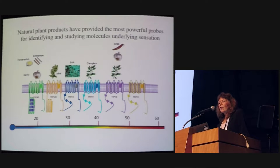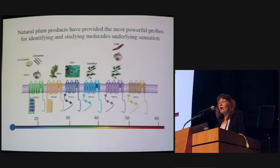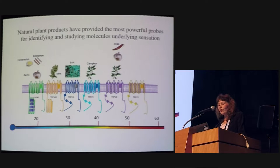This schematic is meant to illustrate the idea that natural plant products have really over the years provided a number of powerful probes in order to identify all of these channels and study the molecules underlying sensation — what actually activates them. You can see a handful of these natural products: we're familiar with some of them, from camphor to chili to garlic, horseradish, and cinnamon, which can activate these channels.